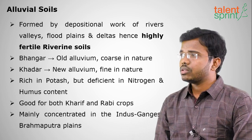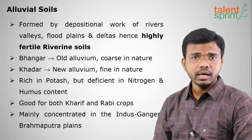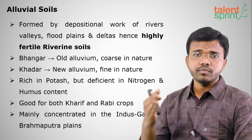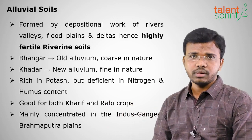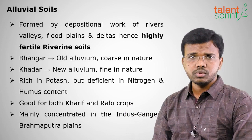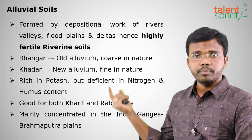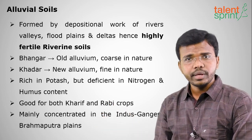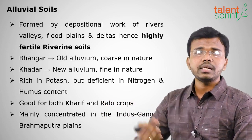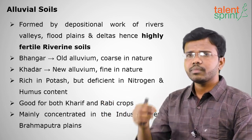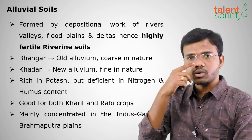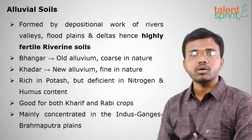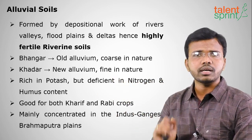Alluvial soils are dominant in the regions of the Indo-Gangetic and Brahmaputra plains. They are fertile because of the rivers. Himalayan rivers are perennial — they flow throughout the year — unlike the Godavari and Krishna rivers of the southern peninsula. These perennial rivers bring huge amounts of fertile silt to northern India, forming alluvial soils that are very fertile of all soil types.